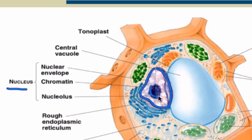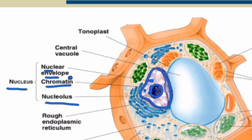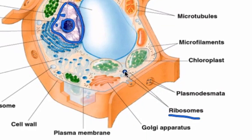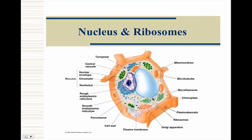Within that structure there is a darkened region, which is the nucleolus, which we're going to talk about. There's also chromatin found inside the nucleus. It's also composed of a nuclear envelope, as we would say. Not only do you have this, you also have ribosomes, which are the most numerous organelle in a cell. So we're going to briefly talk about each one of those.